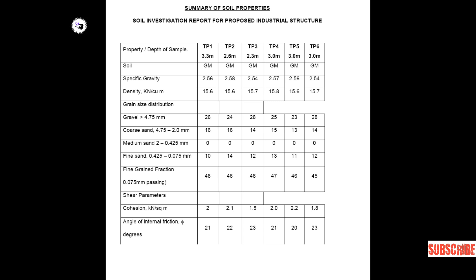Specific gravity values across all pits: 2.56, 2.58, 2.58, 2.54, 2.57, 2.54. Bulk density in kilonewtons per cubic meter: minimum 15.6, maximum 15.8, with values of 15.6, 15.6, 15.6, 15.7, 15.6, and 15.8.